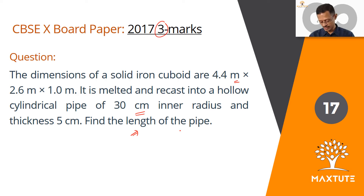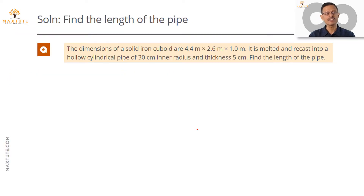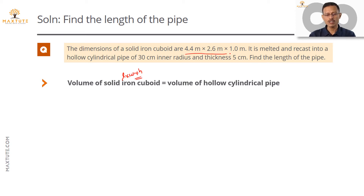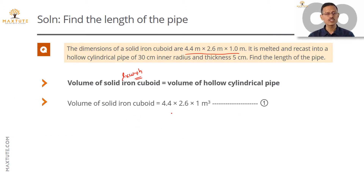The basic concept on which this question runs is that the volume of the cuboid is equal to the volume of the hollow cylindrical pipe. The volume of a cuboid is length times width times height, and we have all these dimensions given to us. So the volume of the cuboid is 4.4 × 2.6 × 1 cubic meters.